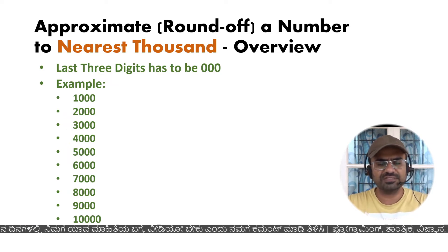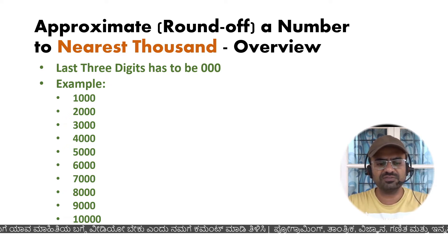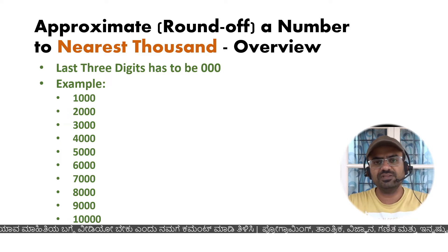For example: one thousand, two thousand, three thousand, four thousand, five thousand, six thousand, seven thousand, eight thousand, nine thousand — these are all multiples of one thousand.